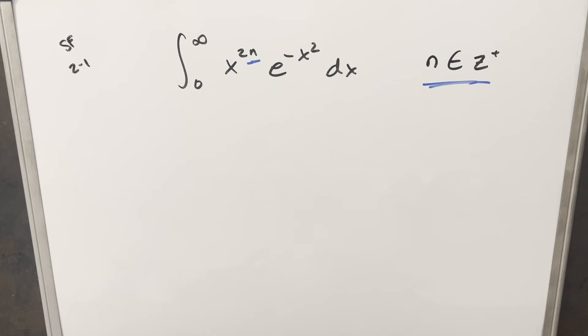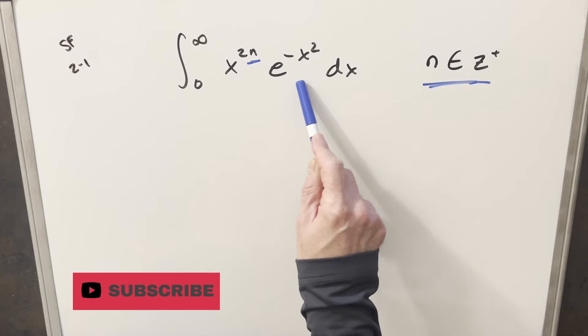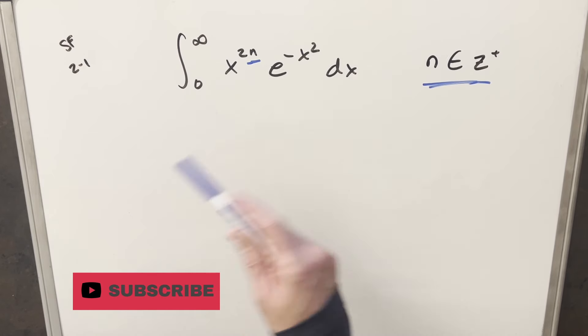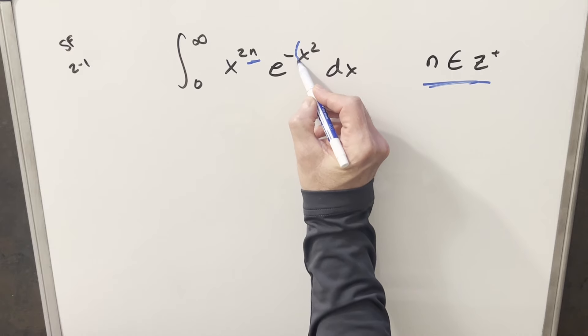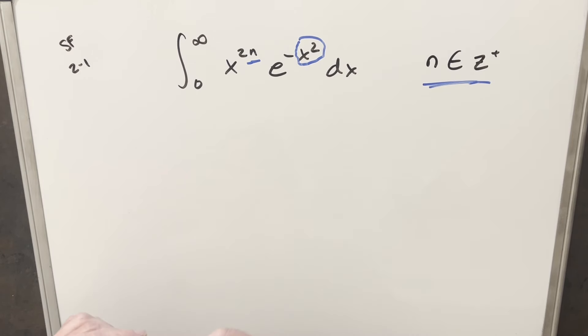I was thinking this problem is actually pretty similar to when we had a few days back, where instead of e to the minus x squared, I think we had ln x to the n there. So kind of similar, and this was like x to the m. What I wanted to do is approach it kind of a similar way. And the first problem I noticed really, having x squared here, we really don't like having something like that on the exponential.